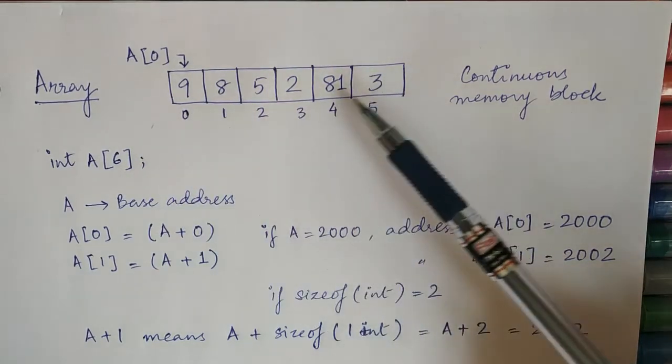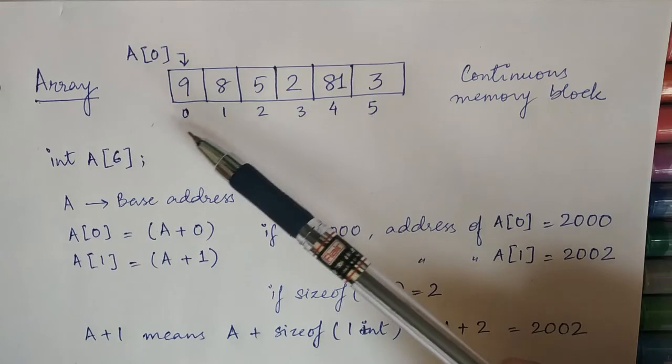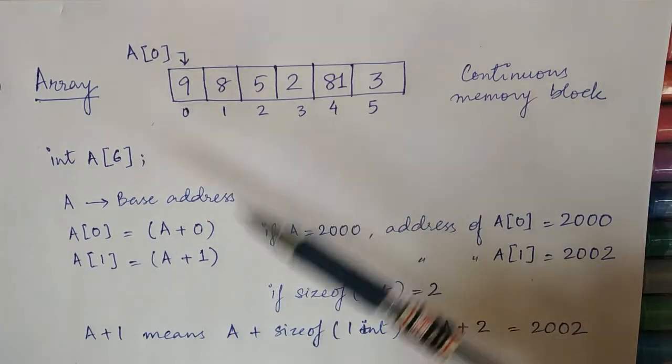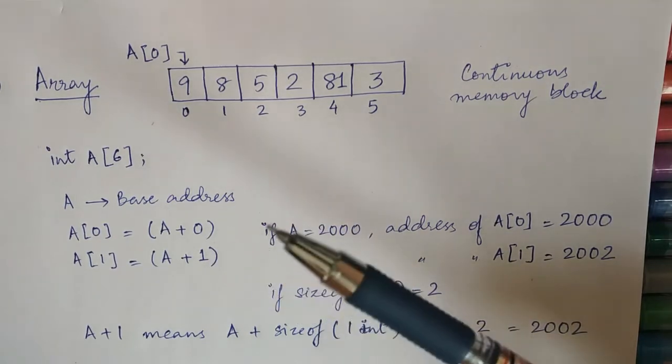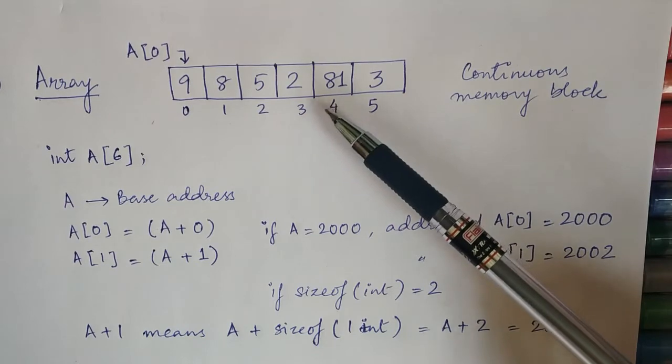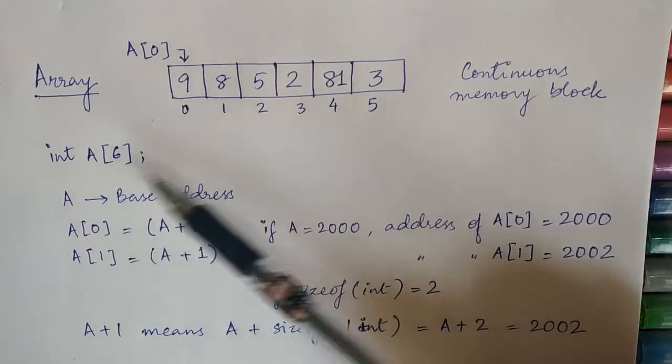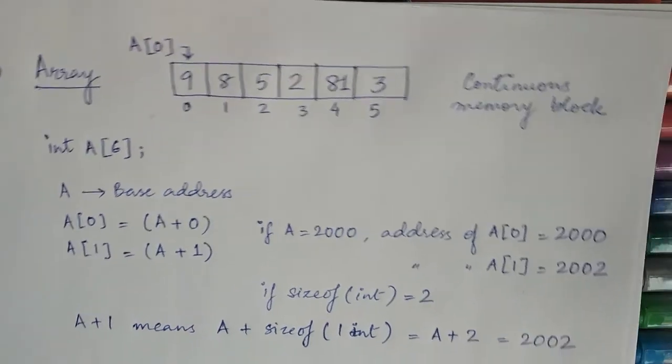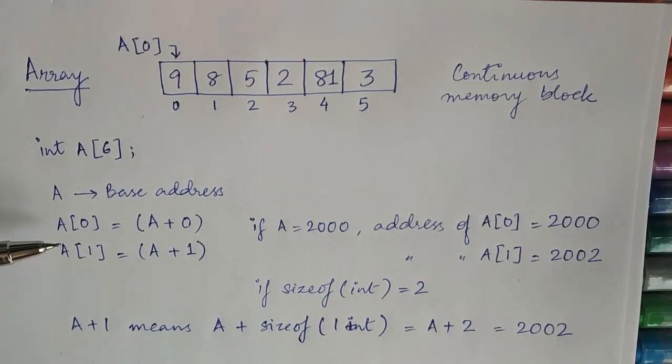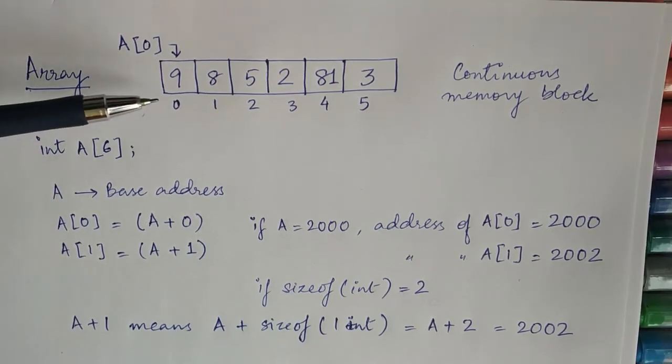The name of the array is A. It is a continuous block of memory where you have added elements. Maybe you have added them at the time of initialization or maybe you have added them later on one by one as the need arises for addition of elements in this array.